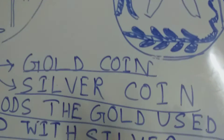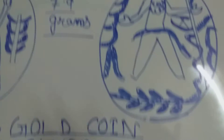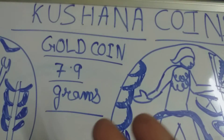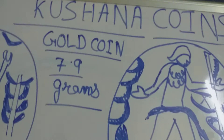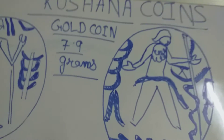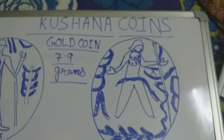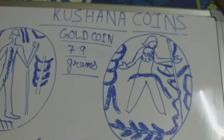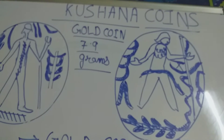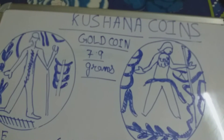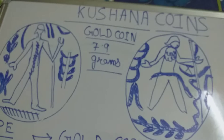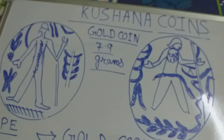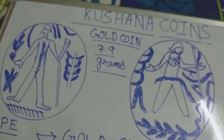The two types are gold coin and silver coin. The weight of a gold coin is 7.9 grams, which indicates that the economic conditions of the Kushana dynasty were quite good.